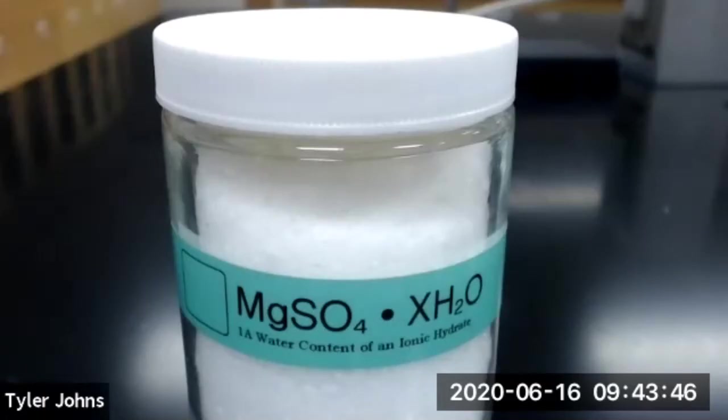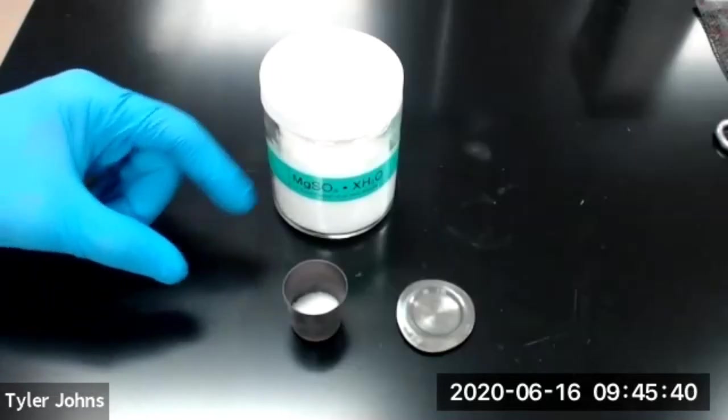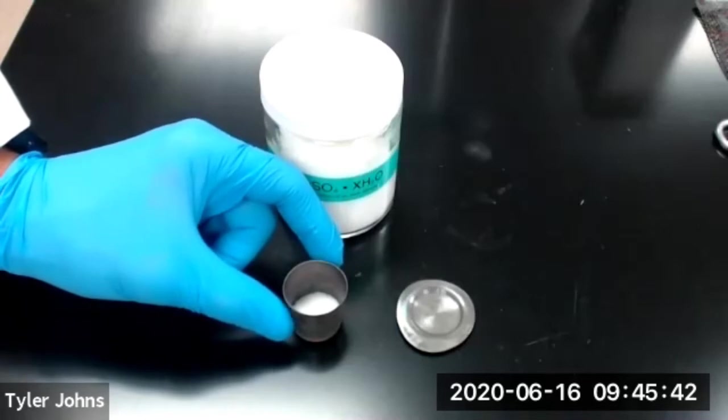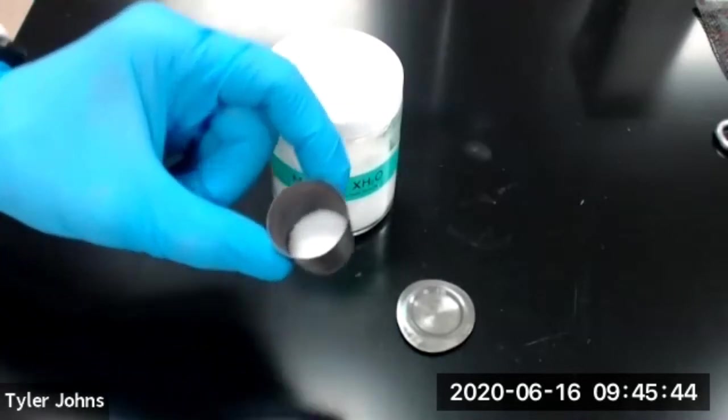We next need to obtain between three and five grams of an unknown hydrate. The unknown hydrate that we're going to be using today is magnesium sulfate with an X number of hydrates. We've added the magnesium sulfate with an X number of hydrates to our crucible.